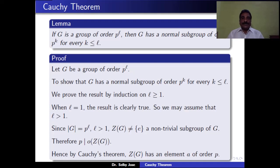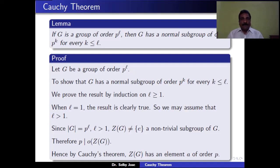Proof by induction on L: Suppose G is a group of order P^L. We show that for each K ≤ L, G has a subgroup of order P^K. Base case L = 1: the order of G equals P. The only subgroups are the identity subgroup and G itself, both normal in G, with orders P^0 and P^1. So the result holds for L = 1.